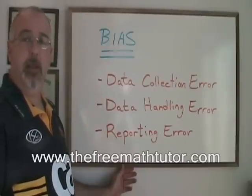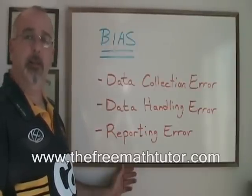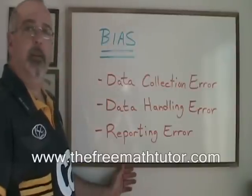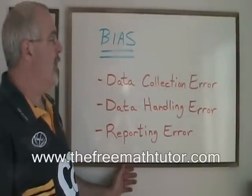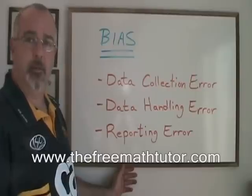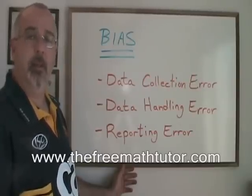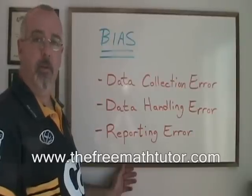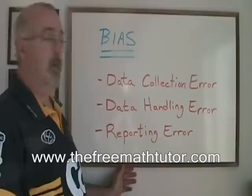Bias has several different meanings, but in the context of our basic statistics course, the meaning of bias is something that has gone wrong while conducting a sample survey — something that is going to make the results meaningless or less meaningful. There are three main types of errors that happen during the conduction of a sample survey that cause bias.